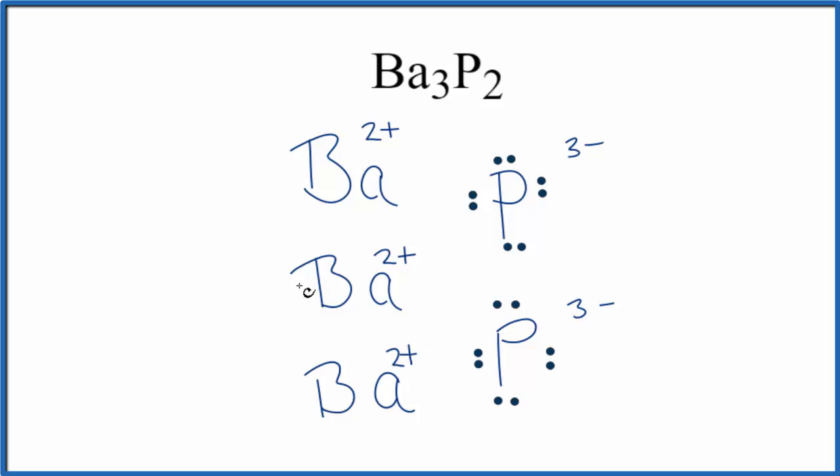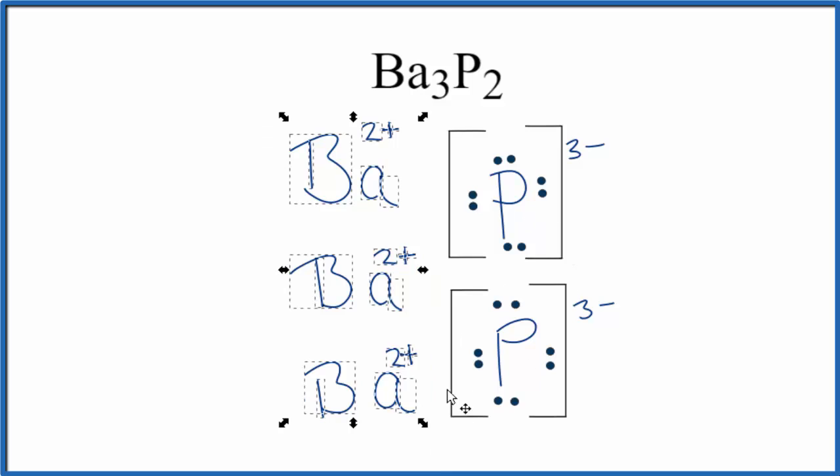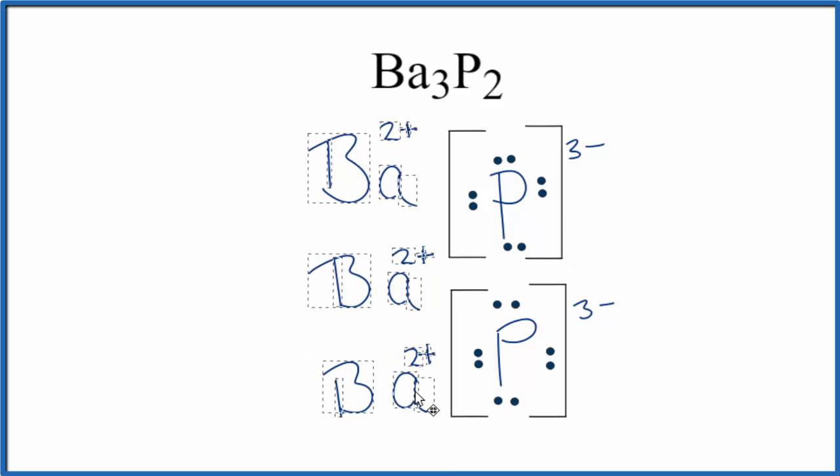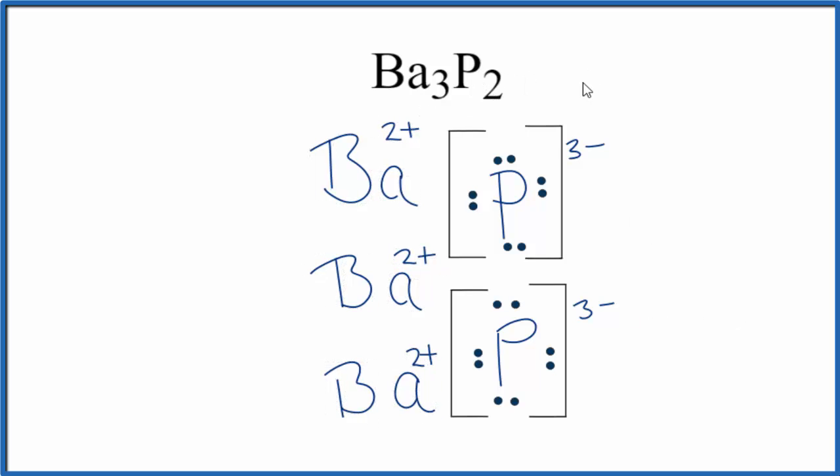To show that the electrons were transferred from the barium to the phosphorus, we're going to put brackets around the phosphorus. You'll note that we have these positive ions here, and the negative ions here with the phosphorus. Those oppositely charged particles attract, that's what forms the ionic bond for Ba3P2.